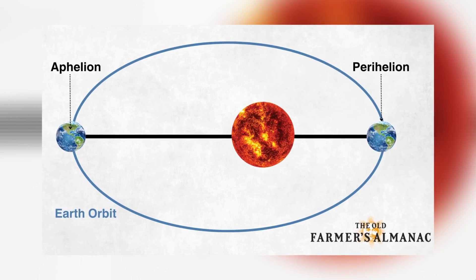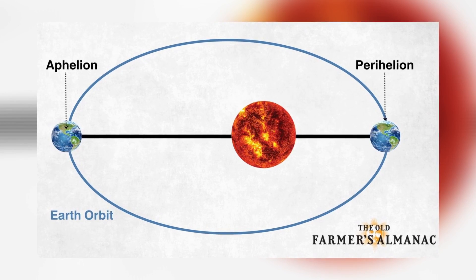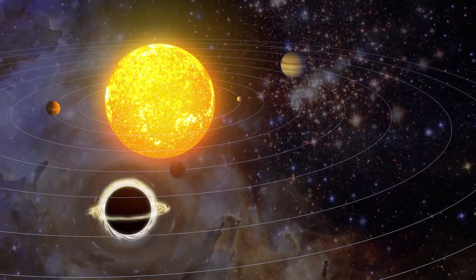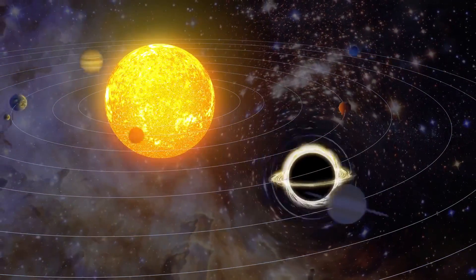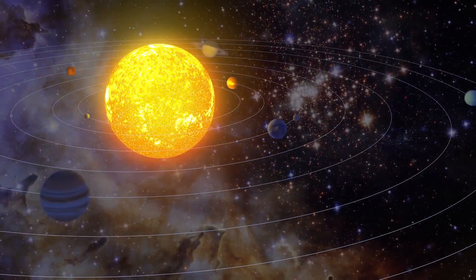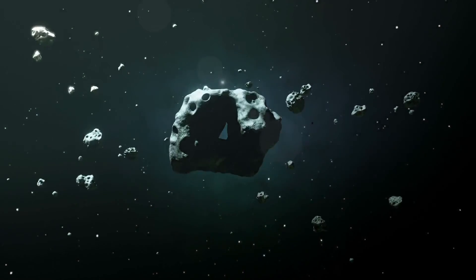Yet, despite the significance of this event, we can't observe it from Earth. The Sun's glare has completely swallowed it from view. As our planet sits on the opposite side of the Sun from the object, we are effectively blind to 3i Atlas until it emerges again.